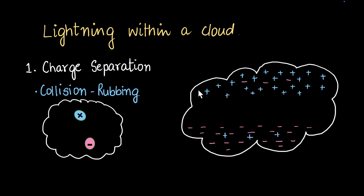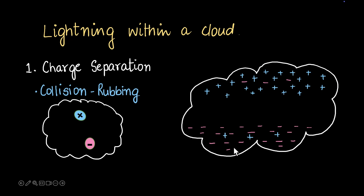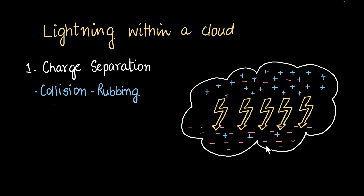When we have just one positive charge near the top and one negative charge near the bottom, nothing's going to happen. But when such rubbing keeps happening again and again, you end up with a large number of positive charges near the top and a large number of excess negative charges near the bottom. When that happens, the attraction between these positive and negative charges is very high, and that causes them to move towards each other — and bang, you have lightning. The flow of charges is what causes lightning.